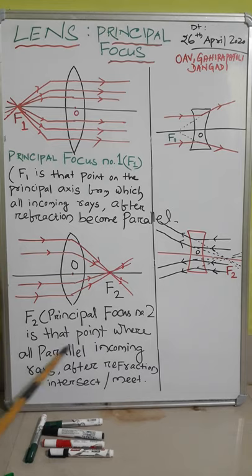Next, what is F2 or principal focus number 2? It is that point where all parallel incoming rays after refraction intersect or meet. This is that point where all parallel incoming rays, after refraction, meet at F2.